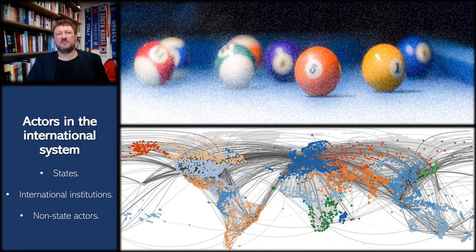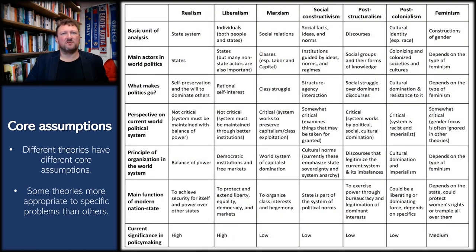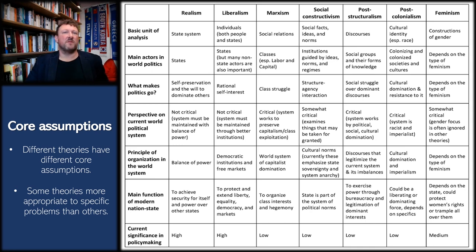Our course journey will take us from the traditional view of state-centric international relations through to a contemporary reinterpretation of IR and the expansion of the IR theory family tree, which looks beyond the state and offers critical perspectives on global affairs. Every international relations theory has a set of core assumptions, and because of the complexity of the international system, different theories might be more appropriate than others for any specific problem. IR theorists ask many different types of questions, and these different questions are best answered by employing the methods and theories most appropriate to them.